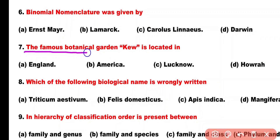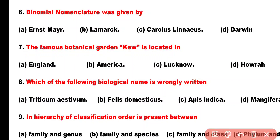Question number 7. The famous botanical garden Kew is located in: Option A: England, Option B: America, Option C: Lucknow, Option D: Huara. Correct answer is Option A. The famous botanical garden Kew is located in London, England.